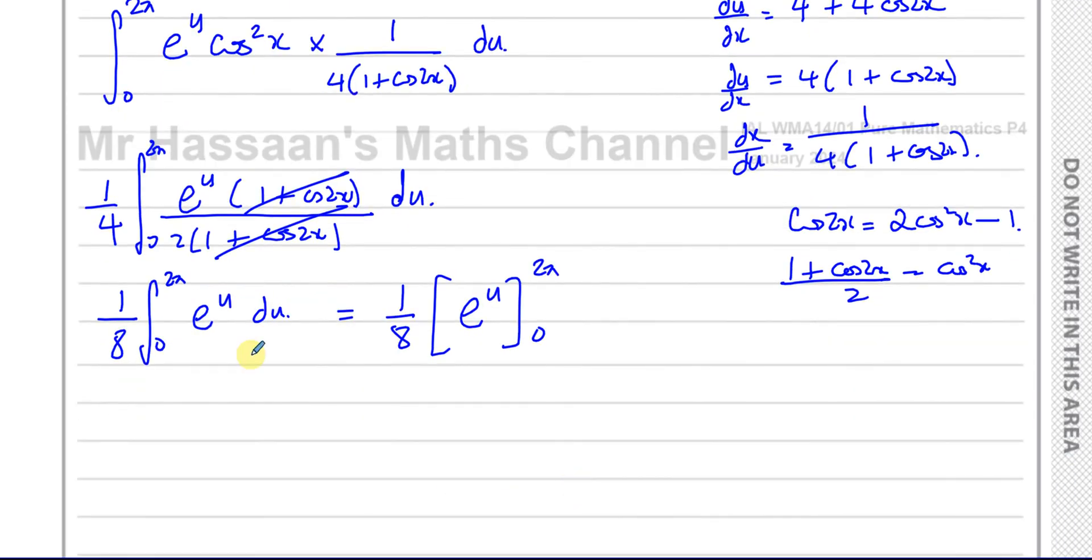So now that should give us our answer. You have 1 over 8 times e to the power of 2 pi minus e to the power of 0. Remember e to the power of 0 is equal to 1, so you have 1 over 8 times e to the power of 2 pi minus 1.